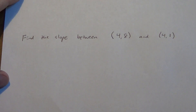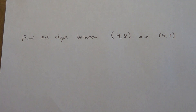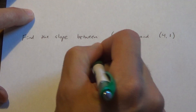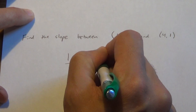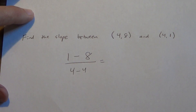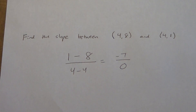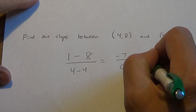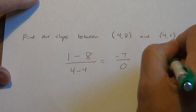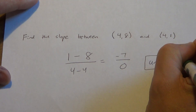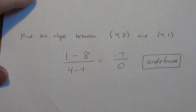Last one — find the slope between (4, 8) and (4, 1). Here we go: y2 minus y1 is 1 minus 8, and x2 minus x1 is 4 minus 4. We get negative 7 divided by 0. This is a problem — you cannot divide by 0. Division by 0 is called undefined. So our slope is undefined. Remember, slopes can be positive, negative, zero, or undefined. This is an undefined slope.